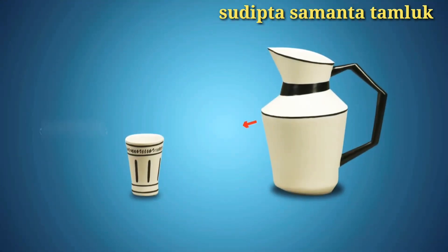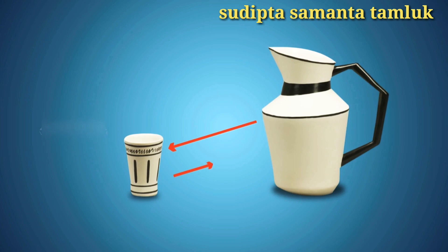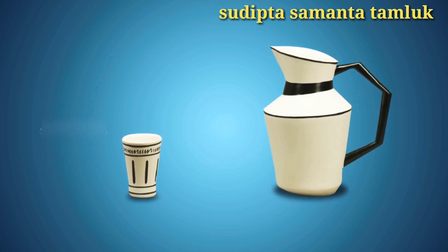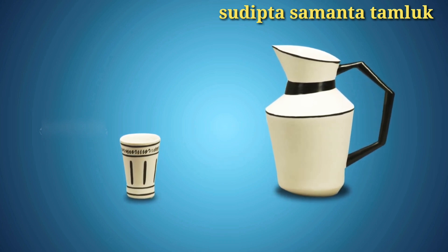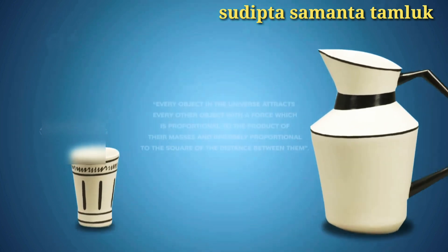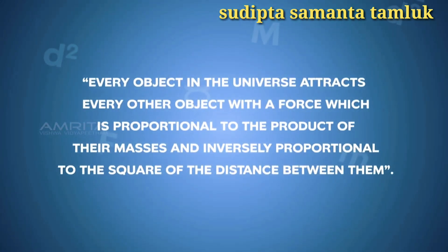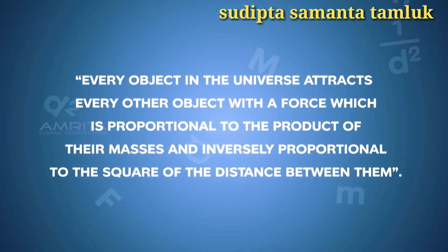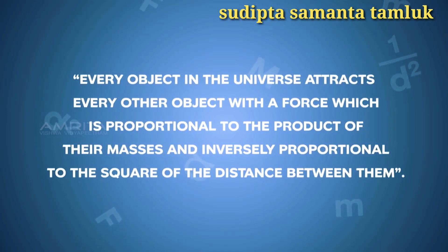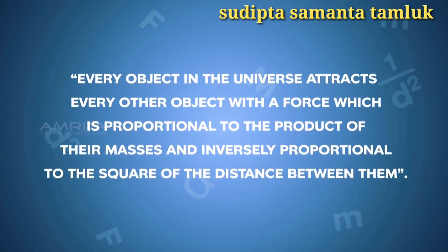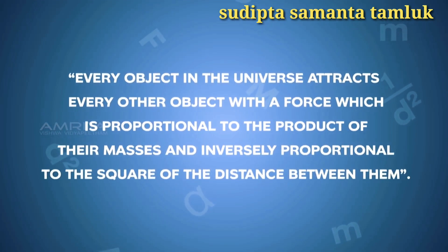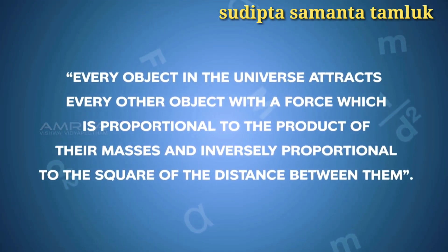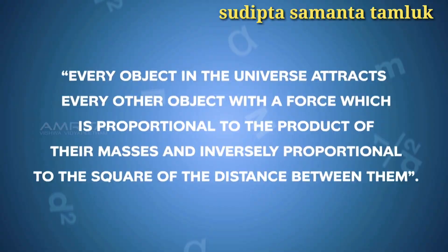All objects in the universe attract each other. This force of attraction between objects is called the gravitational force. Every object in the universe attracts each other with a force which is proportional to the product of their masses and inversely proportional to the square of the distance between them.